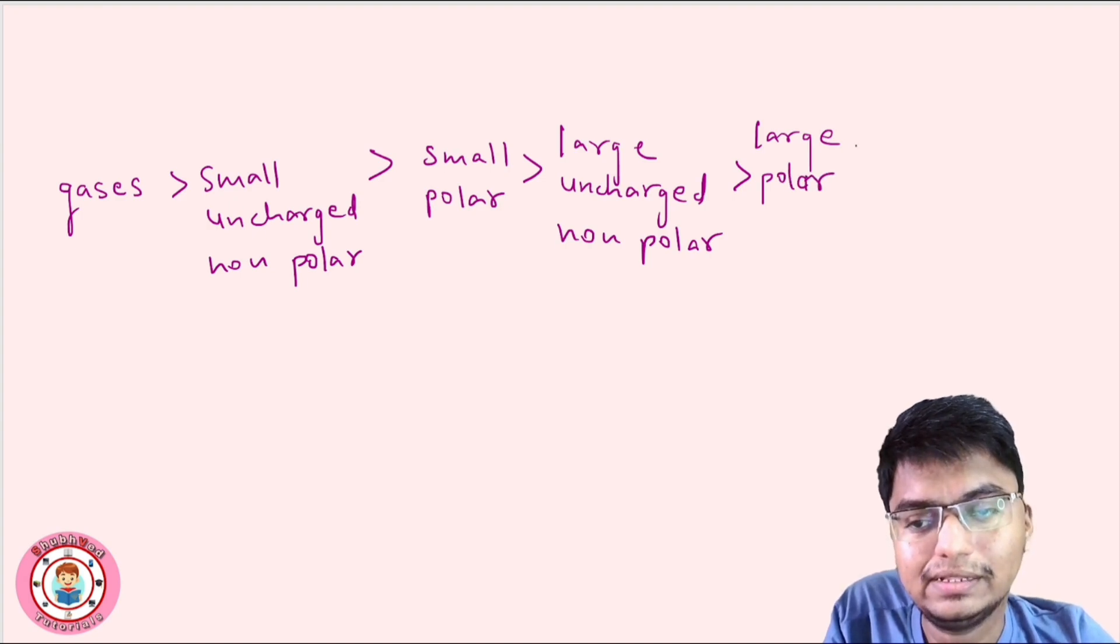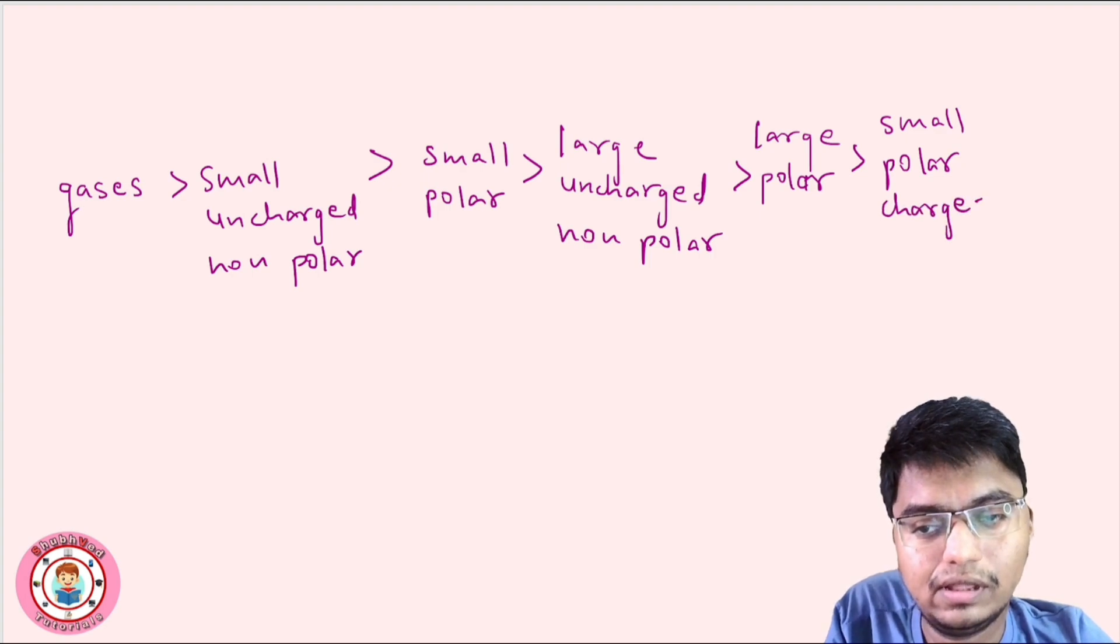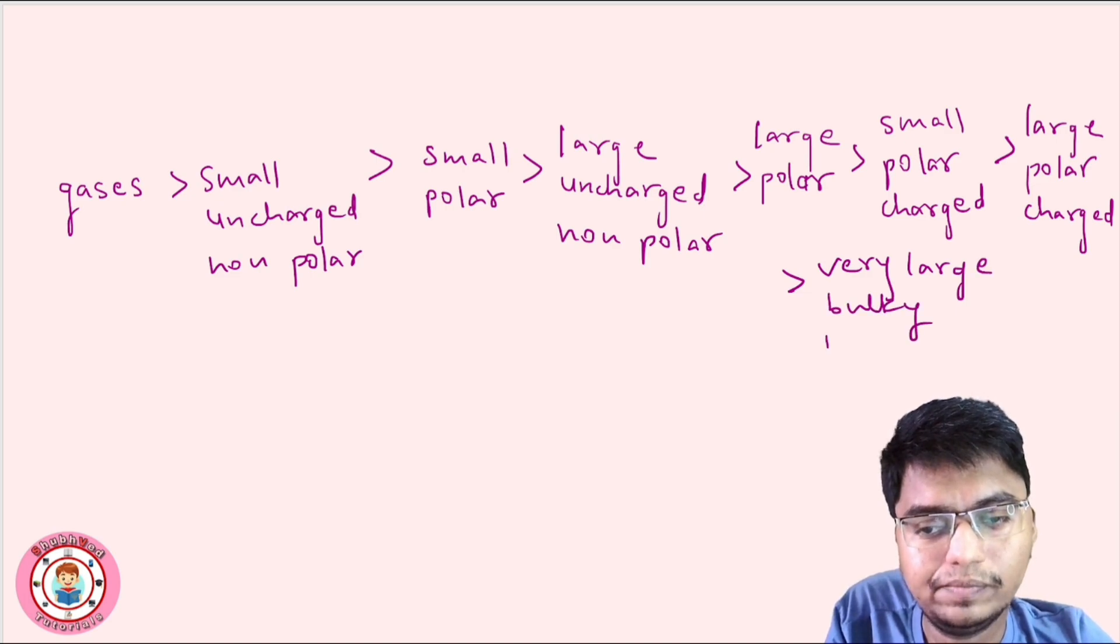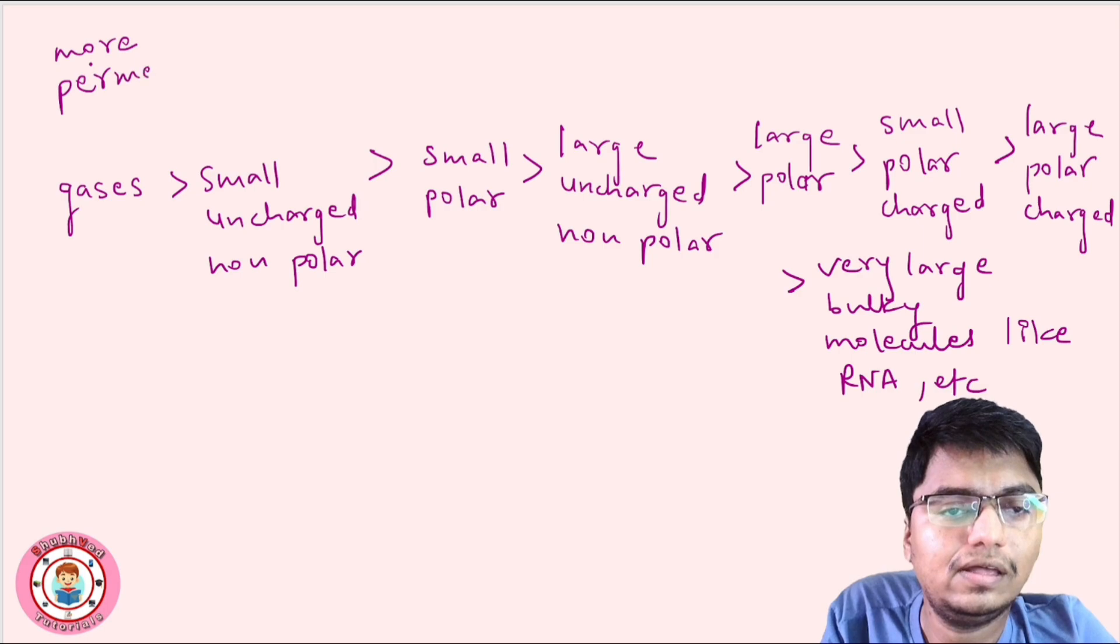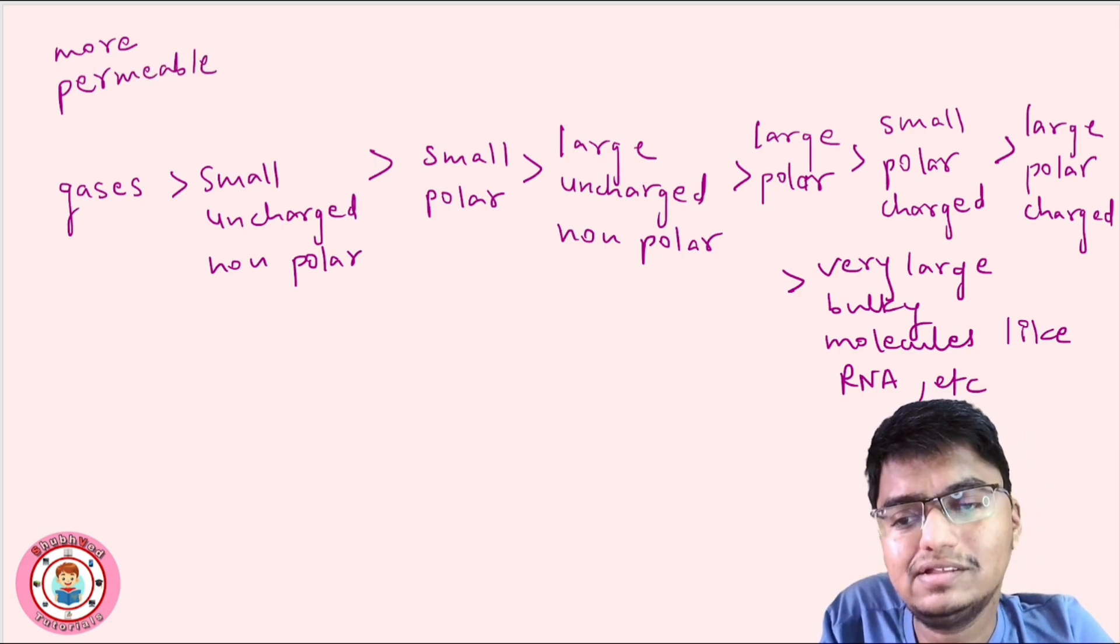Then small charged, then large charged, then very large molecules like RNA, etc. So this is the order starting from gases, which is more permeable, and this is the last molecule, very large bulky molecules, which is impermeable, means it cannot pass.